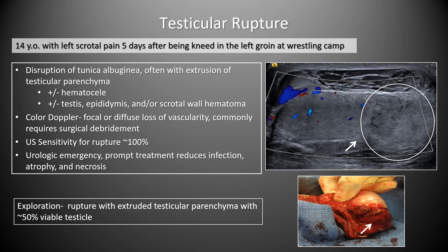A 14-year-old with left scrotal pain five days after a wrestling injury showed focal disruption of the tunica albuginea with heterogeneous material extending beyond the testicular margin — extruded testicular parenchyma — along with a hematocele and absent flow in the extruded portion but preserved flow in the remainder of the testis. Testicular rupture indicates disruption of the tunica albuginea, often with parenchymal extrusion, and commonly requires surgical debridement. Ultrasound is 100% sensitive for rupture, which is a urological emergency; prompt treatment reduces infection, atrophy, and necrosis.